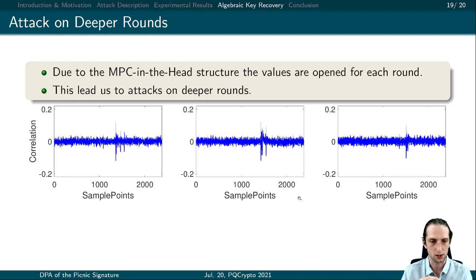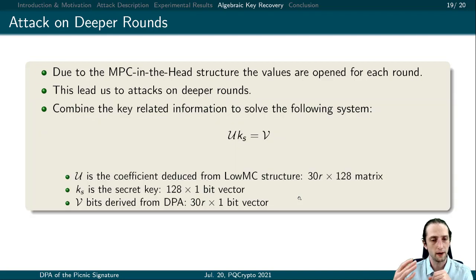Due to the MPC-in-head structure, the values are open for each round, and the key-related values for each round are revealed. Here you can see the DPA attack on the second round S-box layer. Clearly, the images are similar to what we have shown. What we are getting from attacks on deeper rounds is a system of linear equations as given in the slide. This is U times keyS equals V. The secret key keyS is 128-bit, U is derived from the LowMC structure, and V is derived from the attacks.